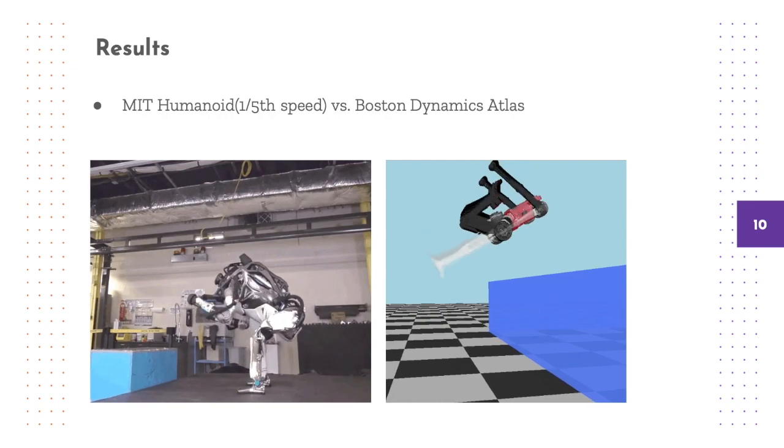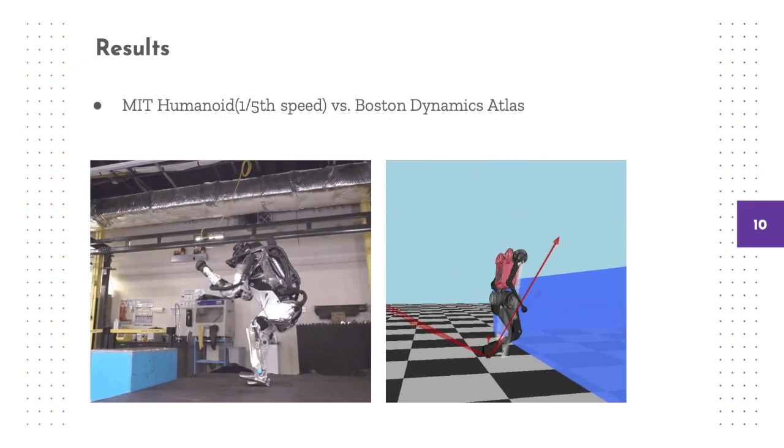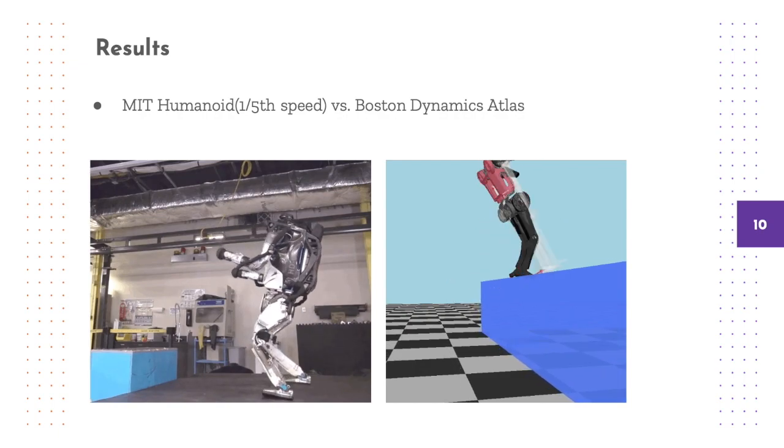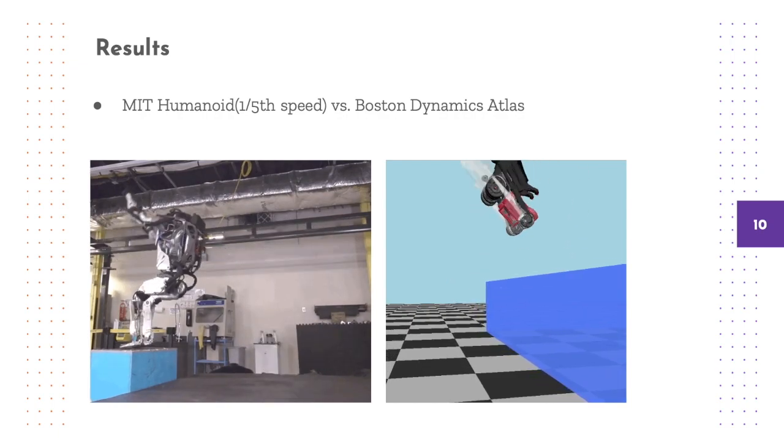On landing, Atlas takes a step to stabilize itself, something that our robot is not capable of performing currently, but we plan to explore in the future as it is a good strategy to regain balance by enabling optional stepping.